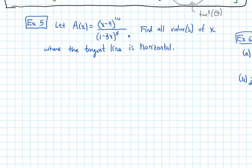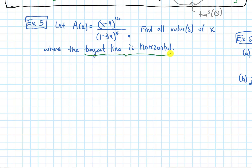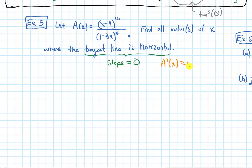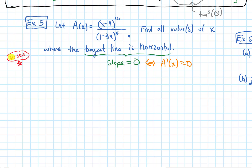This example says let a of x be x minus 4 to the tenth power, over 1 minus 3x to the fifth power. Find all values of x where the tangent line is horizontal. A line is horizontal if the slope is 0, and the slope of the tangent line is the derivative. So this wants to know when the derivative of a equals 0. What rule do we use first — quotient rule, chain rule, product rule, or power rule?